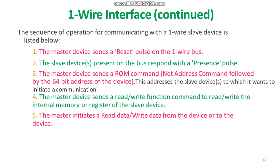The sequence of operation for communicating with a OneWire slave device is as follows. First, the master device sends a reset pulse on the OneWire bus. Second, the slave device responds with a presence pulse. Third, the master device sends a ROM command to address the slave it wants to communicate with. Fourth, the master device sends a read or write function command to read or write the internal memory or registers of the slave device. Finally, the master initiates a read or write of data from the device.